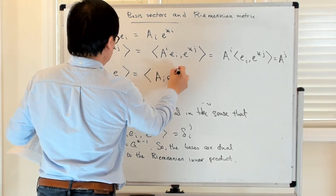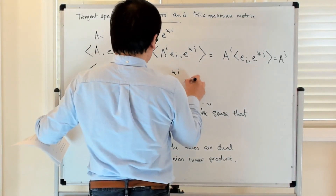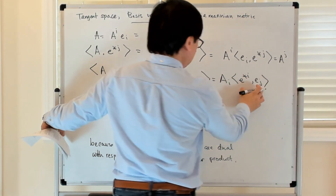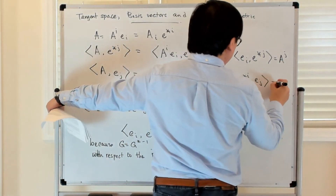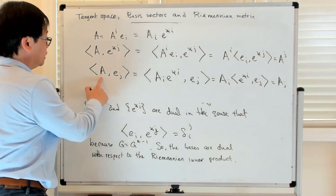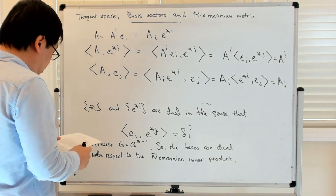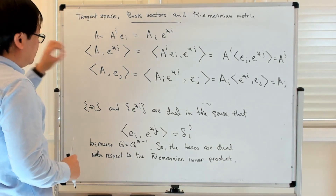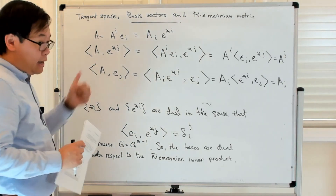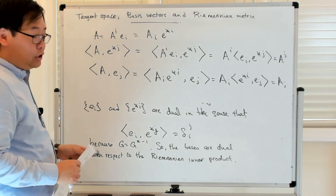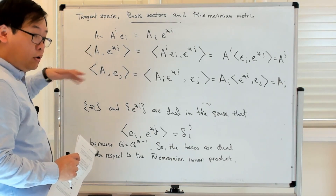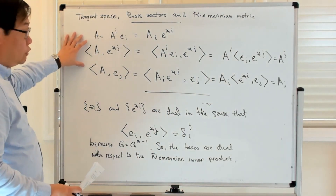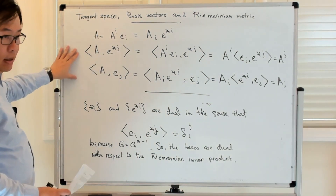Similarly, pairing a with e_j gives a_j — the j-th dual component is obtained by taking the inner product of a with e_j. All of this works nicely together: the metric comes from the convex function, and the relationship between the primal and dual representations also comes from that convexity relationship. These are additional notions of duality that we'll encounter again as the course progresses.